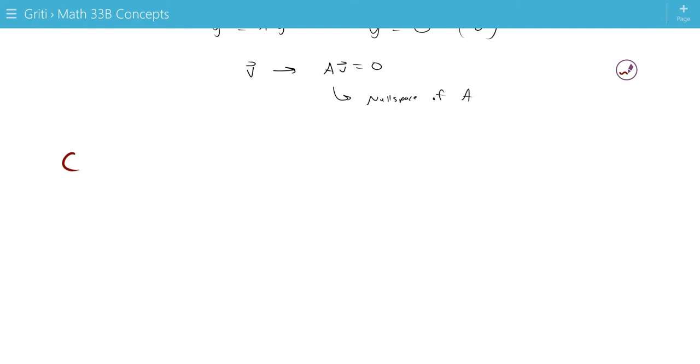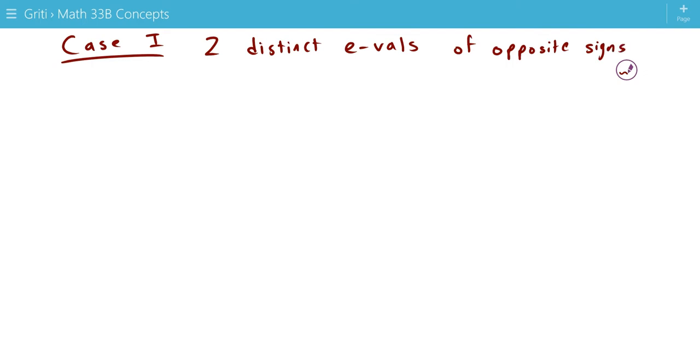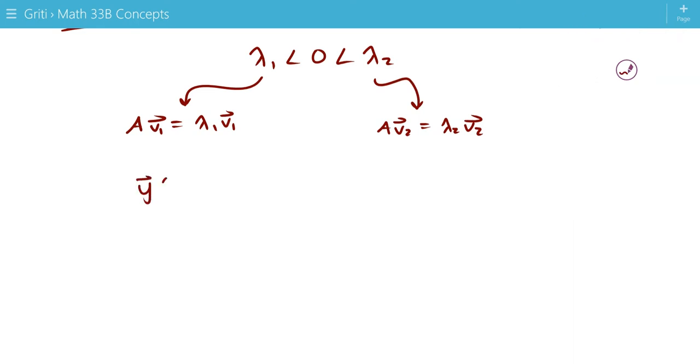Case 1 is when we have two distinct eigenvalues (e-vals). These eigenvalues have opposite signs, lambda 1 is less than 0 and lambda 2 is greater than 0. These have an associated eigenvector that satisfies the equation AV1 equals lambda 1 V1, and for lambda 2, we have AV2 equals lambda 2 V2. Our general solution takes the form y(t) equals C1 e^(lambda1 t) V1 plus C2 e^(lambda2 t) V2, where C1 and C2 are arbitrary constants.